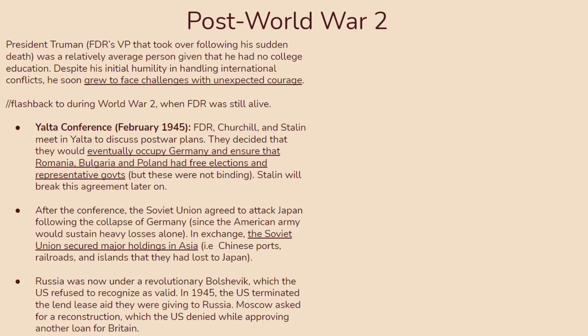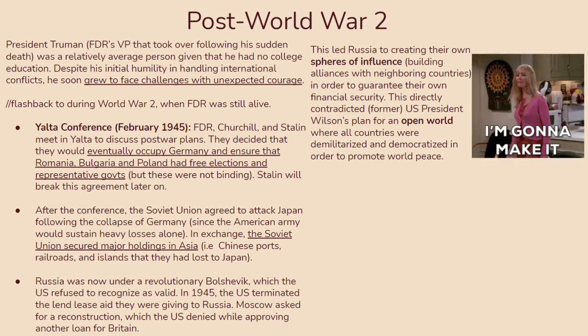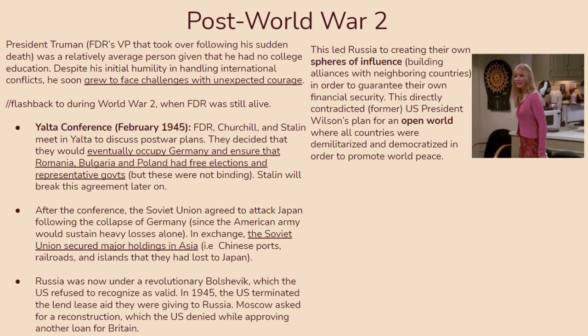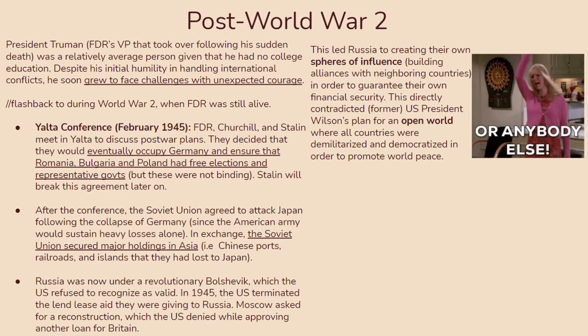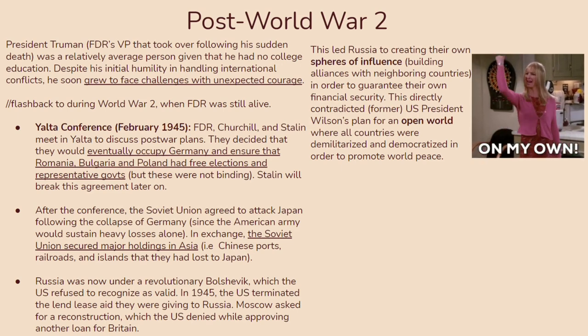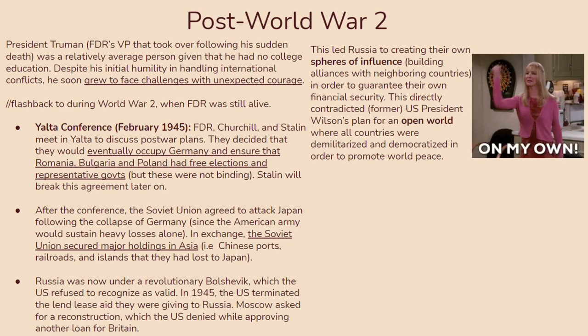In response to the end of lend-lease, Moscow asked for reconstruction aid, which the US denied while approving a loan for Britain. Tensions were already flaring between the US and Russia, and this led Russia to create their own spheres of influence — building alliances with neighboring countries to guarantee their own financial security. This directly contradicted former President Wilson's plan for an open world where all countries were demilitarized and democratized to promote world peace.